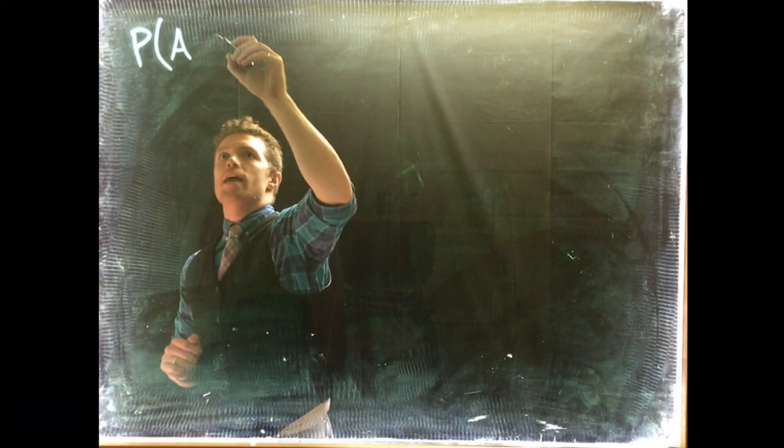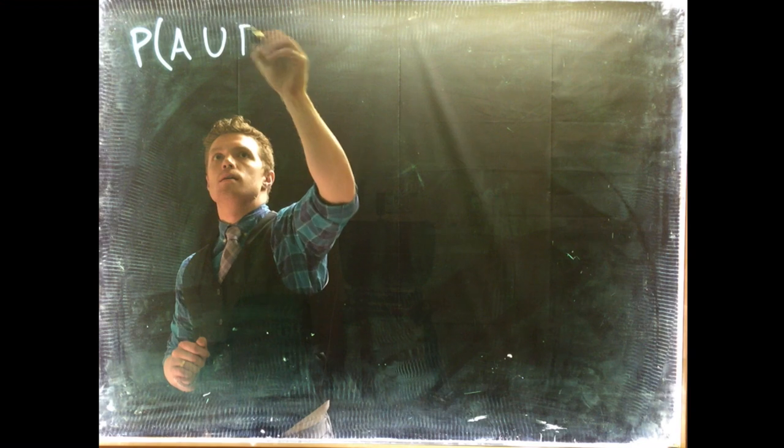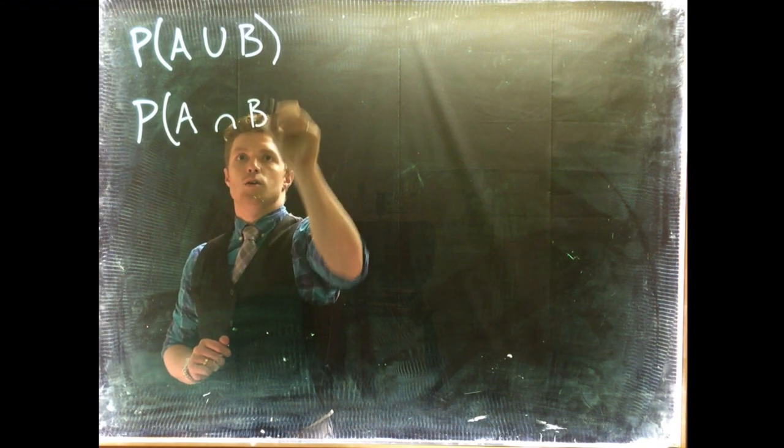Okay, so let's continue our discussion on probability. We've talked a little bit already about doing unions and intersections. We've got the probability of A union B and the probability of A intersect B.